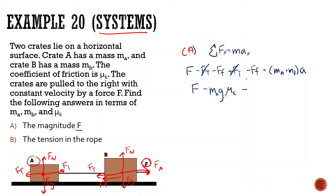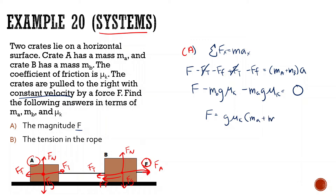Minus the force of friction of the A block — same thing, normal force mAg·μk — equals zero, because it's moving with constant velocity. So F is equal to, bringing both terms to the other side, GμK(mA + mB), simplified.